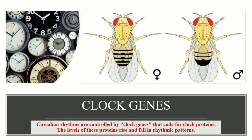These genes code for the clock proteins and the levels of these proteins fluctuate throughout the day. The rise and fall of these proteins is in a rhythmic way, that's why these are known as clock genes and they control the activity of an individual throughout the day.